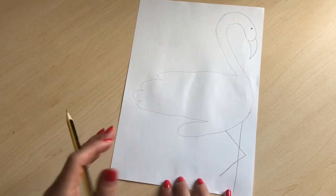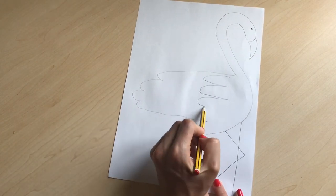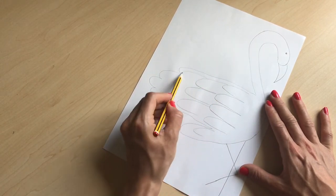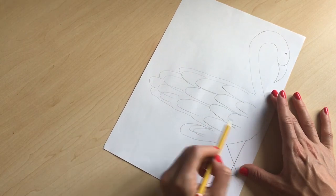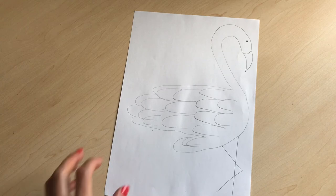We're just going to add a bit of a feathery effect. Just do lots of things like that to add a feathery effect to your flamingo. It's as simple as that.